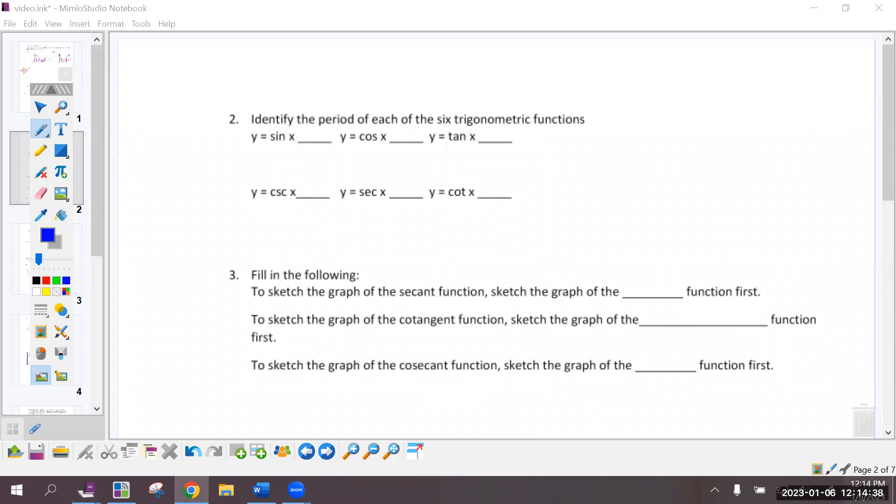So for the periods of all of the parent functions, every single graph has a period of 2 pi except tangent and cotangent. So sine has a period of 2 pi. Cosecant has a period of 2 pi. So does cosine. So does secant. Tangent and cotangent, they each have periods of pi.